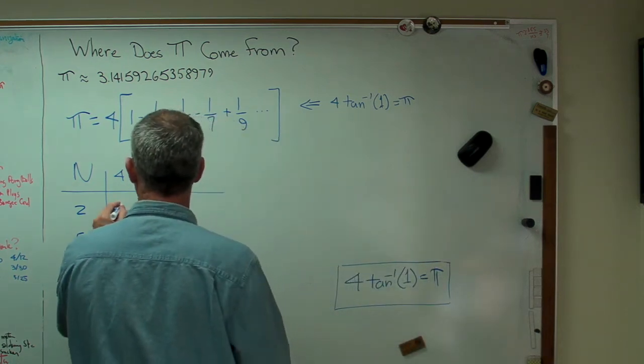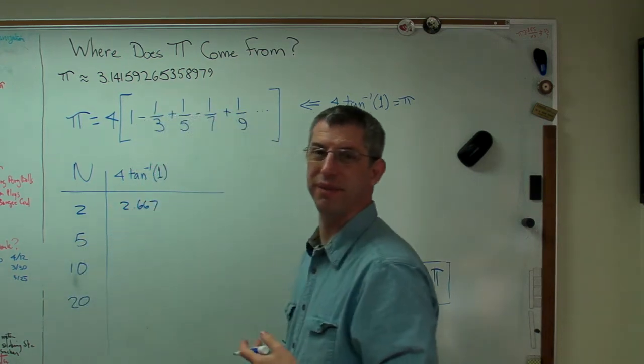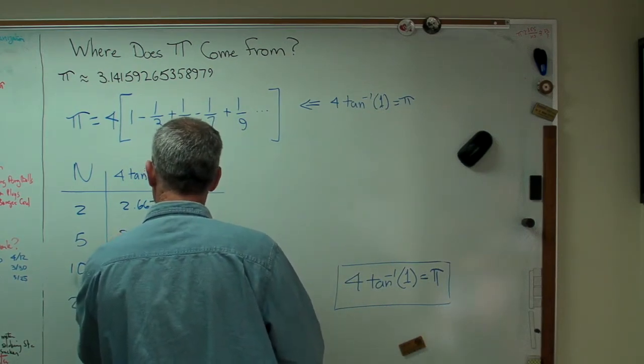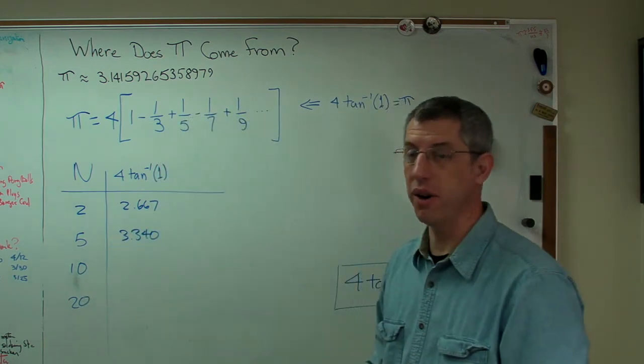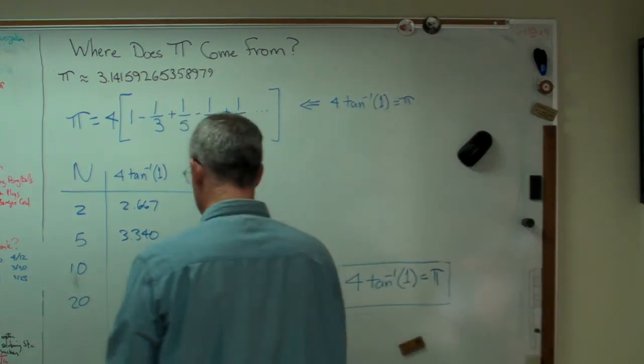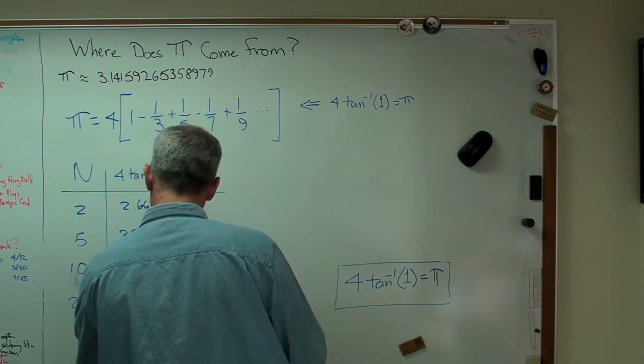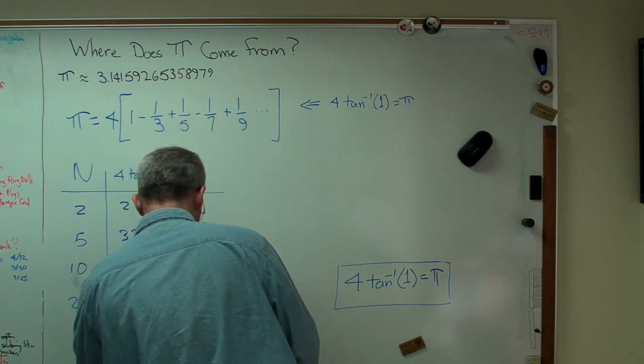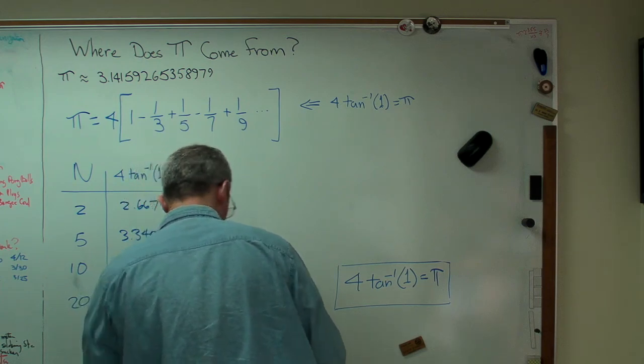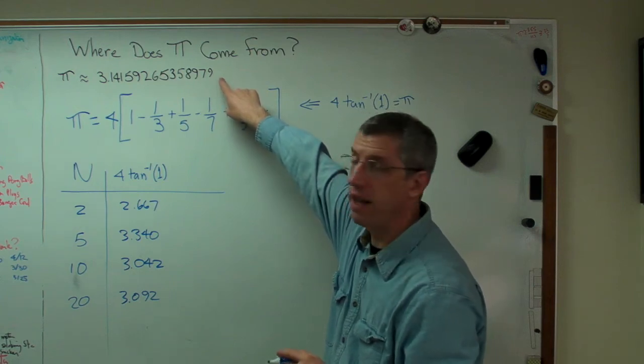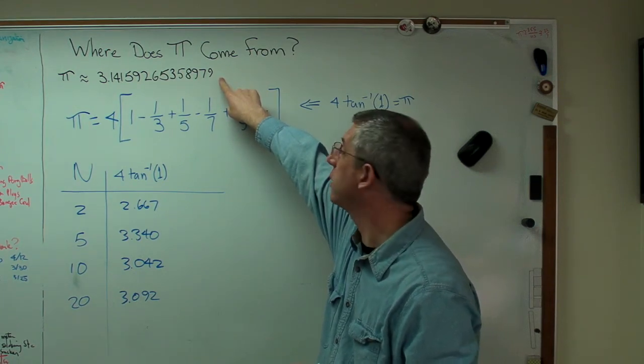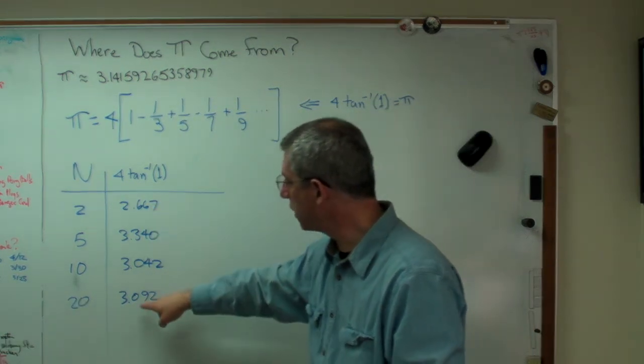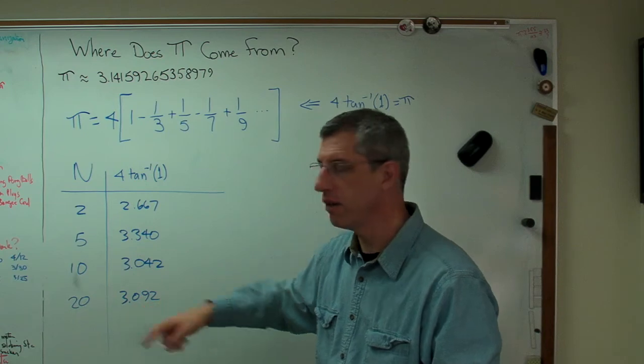For 2, I get 2.667. That's not very good at all. At 5, I get 3.340. That's not great, but you can see it's getting better. At 10, I get 3.042. And at 20, I get 3.092. Not exact, but a fairly precise representation of the numerical value of pi. You can see this is going to get close eventually.